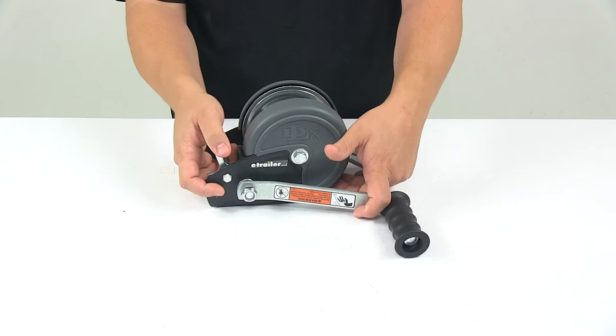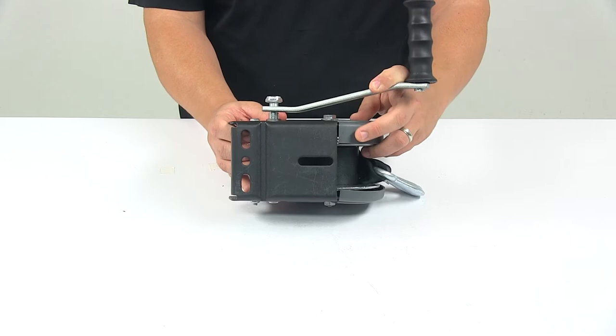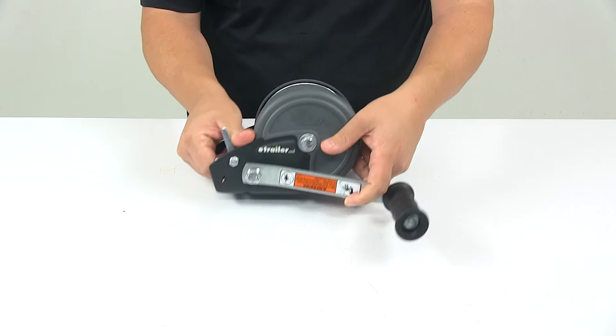The base on the unit features a universal mount design. So you have the elongated holes, mounting hardware not included. The base measures 3 and 7 eighths of an inch by 5 inches.